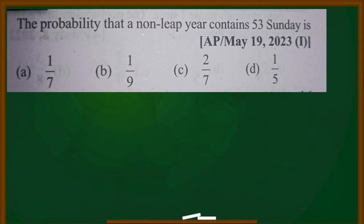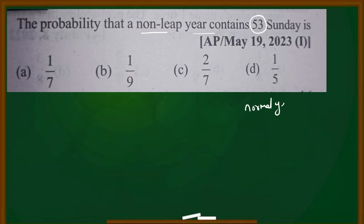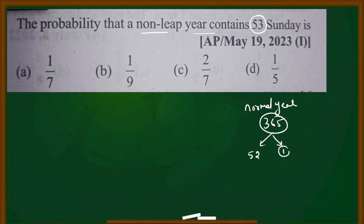First question: the probability that a non-leap year contains 53 Sundays. A normal year has 365 days. 365 days gives 52 weeks and one extra day — that is, one odd day.